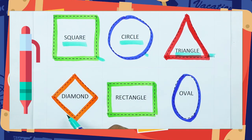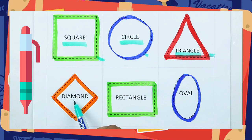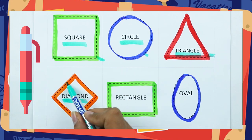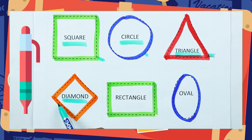Which shape is this? Diamond. D-I-A-M-O-N-D. It's a diamond, with orange color.